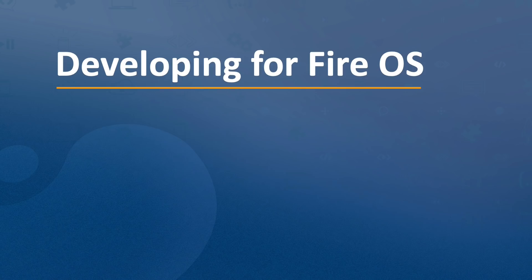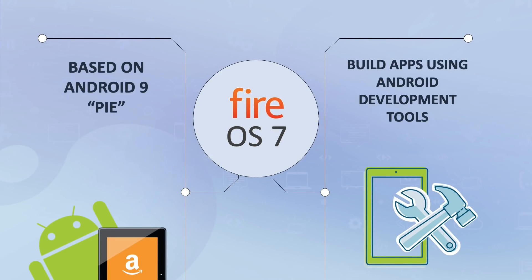Before we dive into how to develop for Fire TV, we need to understand how Fire TV works. Fire OS is the operating system that runs Amazon's Fire TV and tablets. Fire OS is a fork of Android, meaning if you are building or already have an Android application, you can easily port it to Fire OS using the Android dev tools you may already be familiar with. The latest version, Fire OS 7, is based on Android 9 Pi. The main way Fire OS differs from Android is in its services — instead of Google services, Fire OS uses Amazon services. Most notably, apps for Fire OS are provided through the Amazon App Store.